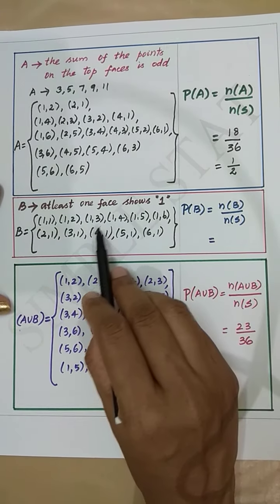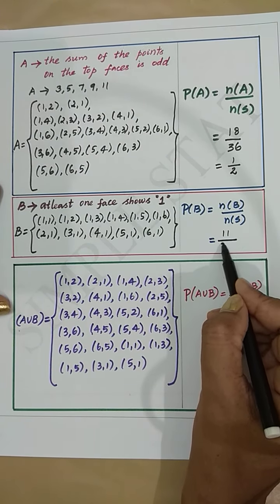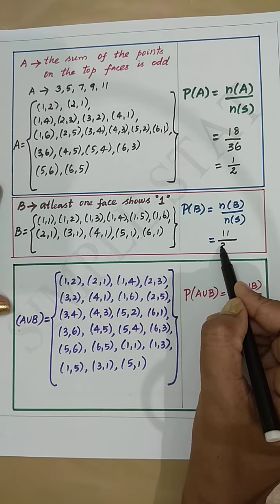Hence probability of B is n(B)/n(S) = 11/36. Probability of A union B is 23/36. The next step is to find A intersection B; the number of elements in A intersection B gives probability of A intersection B = 6/36 = 1/6.